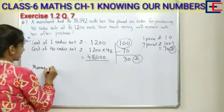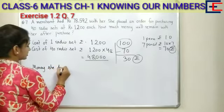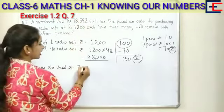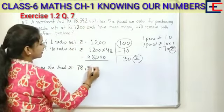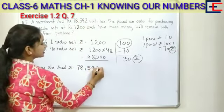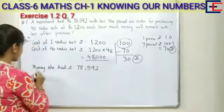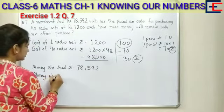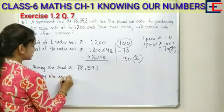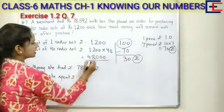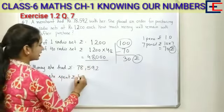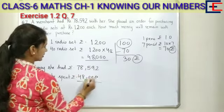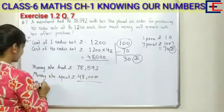She had 78,592 rupees. How much is she spending? She spent rupees 48,000. Then, the money left with her equals 78,592 minus 48,000.